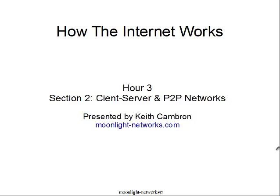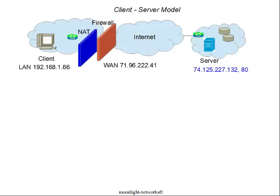I'm Keith Cameron, and this is the course How the Internet Works. This is Hour 3, Section 2: Client-Server and P2P Networks. We've talked a lot about the internet and the technology that makes up the internet. This session is devoted to some of the application models that run across the internet. There are two principal ones: a client-server model and the peer-to-peer model.